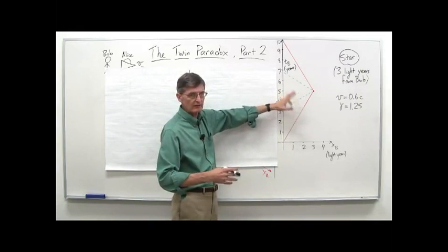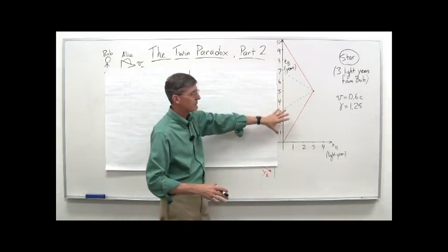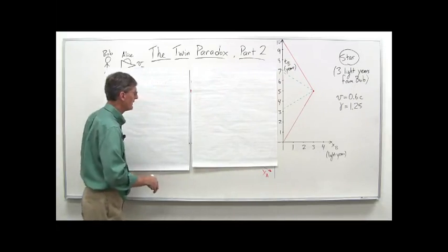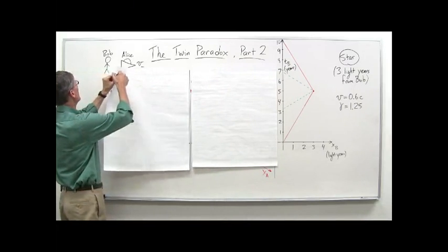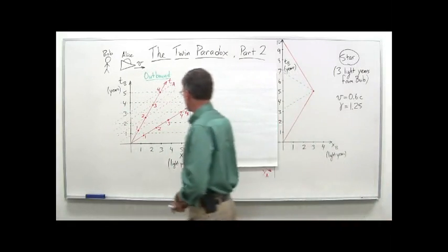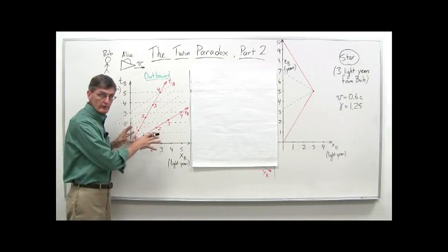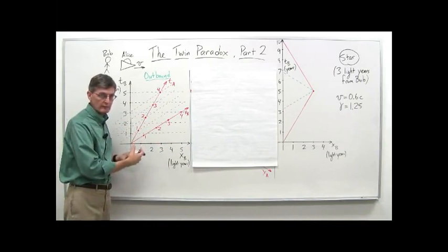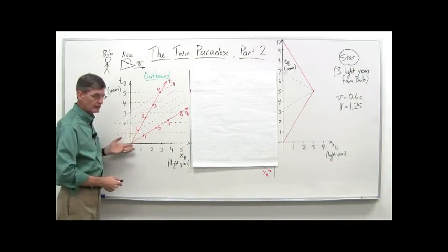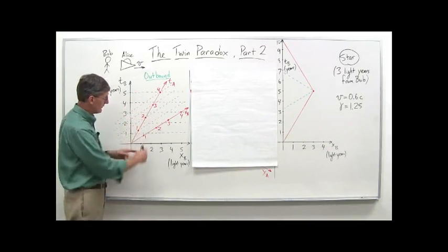We're going to use our space-time diagram to see if we can understand it graphically. You can see I've added some green dashed lines here — we'll get to those in due time. Essentially what we want to do is break this basic diagram up into two parts. We're going to look at the outbound trip, and then we're going to look at the inbound trip. So let's take a look at the outbound trip. We have put both of their space-time diagrams on the same plot, both Alice and Bob. Bob is in black, Alice is in red.